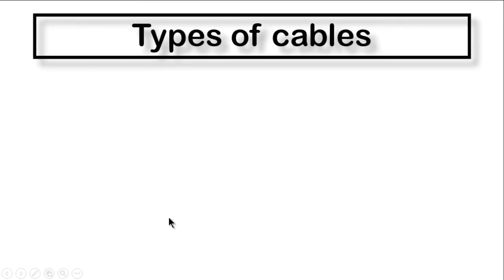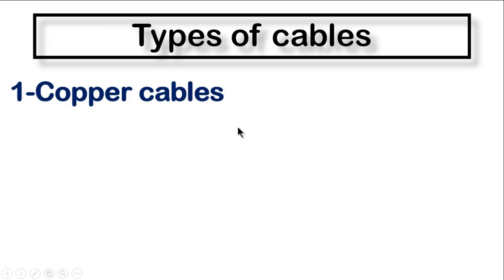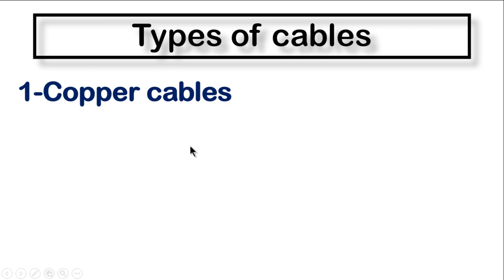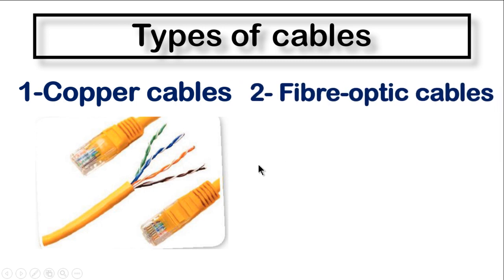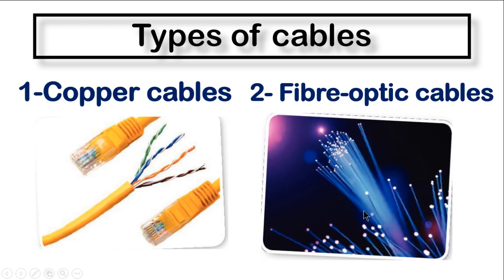When you need to connect cables to your LAN network, there are two types of cables you can use. The first type is copper cables, and the second type is fiber optic cables. Copper cables are the standard, most common type used for small buildings or small local area networks. Fiber optic cables are the newer type - fiber optics is faster than copper cables. They improved on copper cables with fiber optics so you can send data faster.